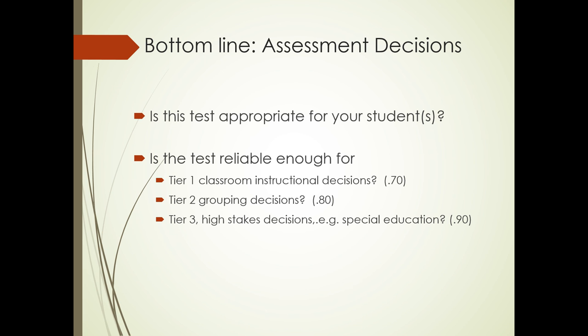Is this test reliable enough for Tier 1 classroom instructional decisions? Remember, you want 0.70 or higher for that. Is it reliable enough for Tier 2 grouping decisions? For that, you want 0.80 or higher. And is it reliable enough for Tier 3 high-stakes decisions like special education or promotion? You want 0.90 or greater. And bottom line, last question. Will this test give you useful information for teaching your students?